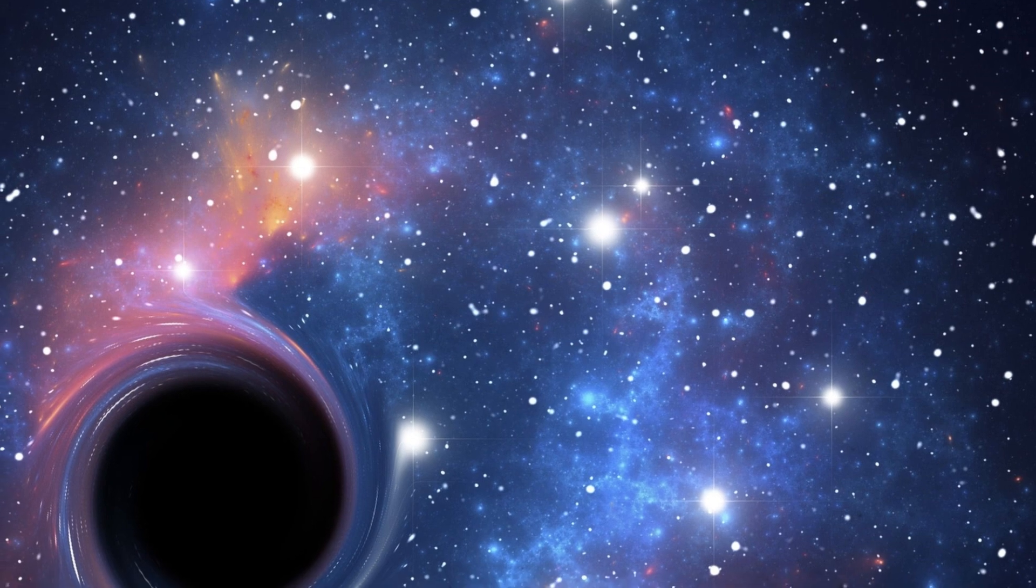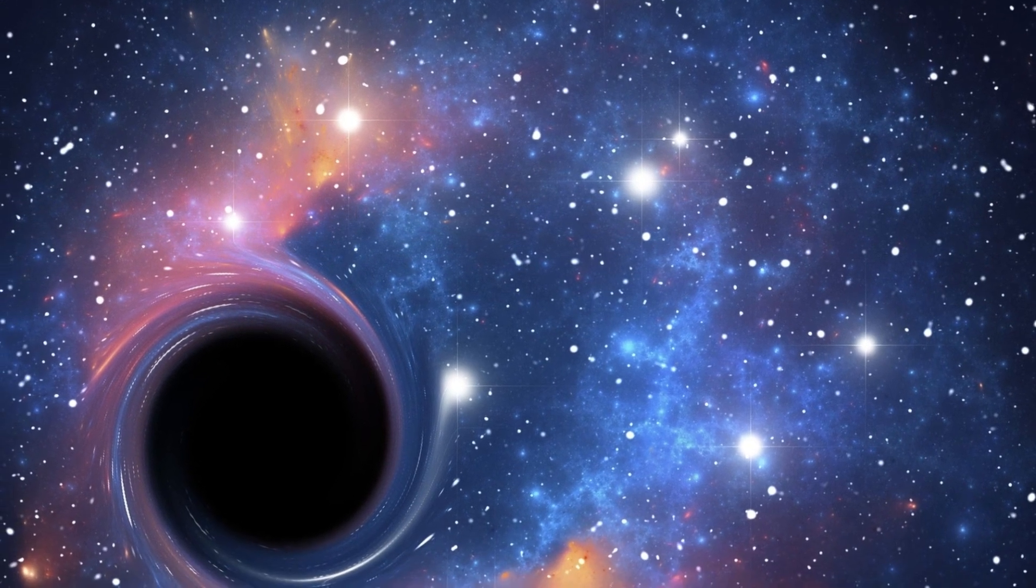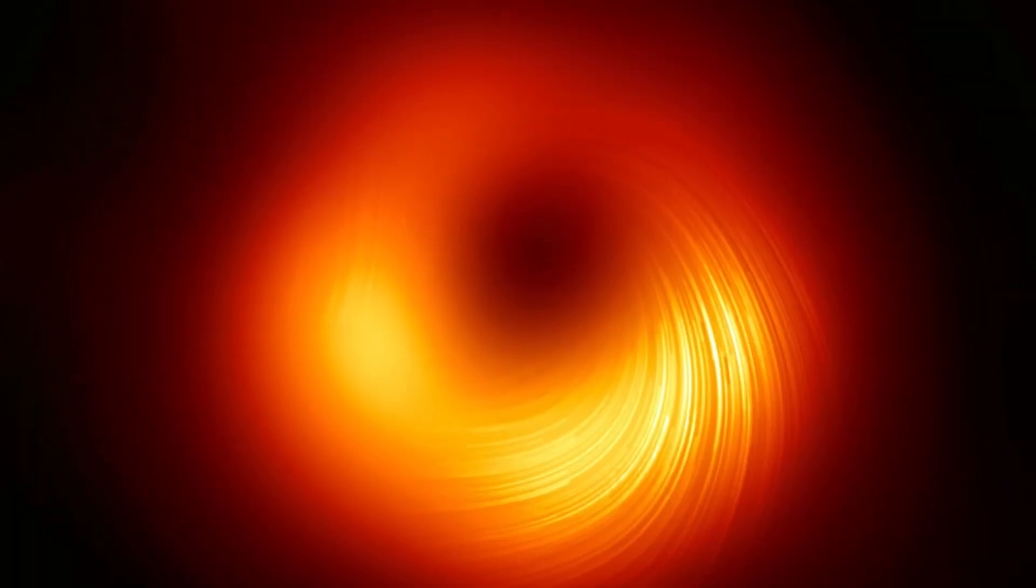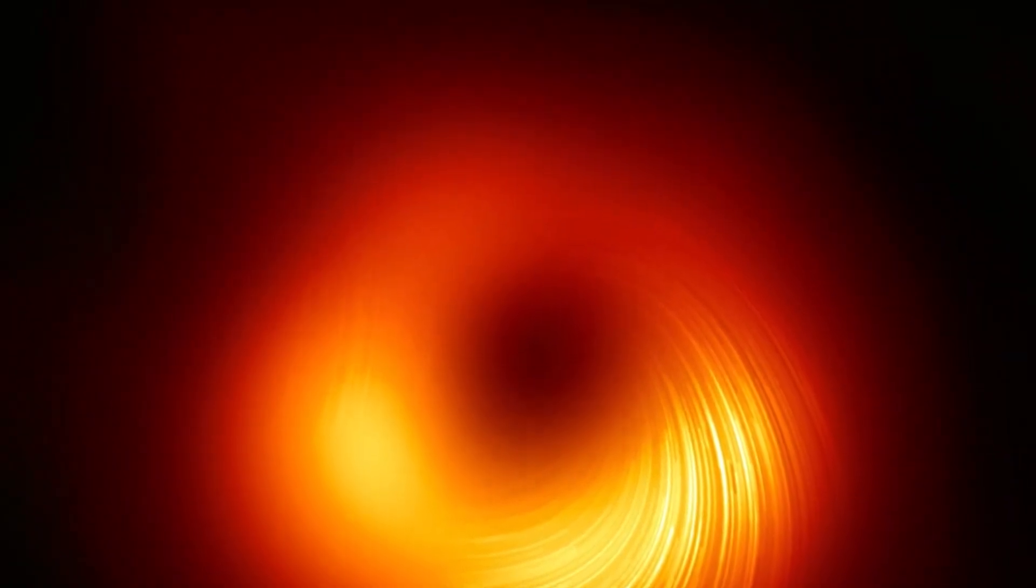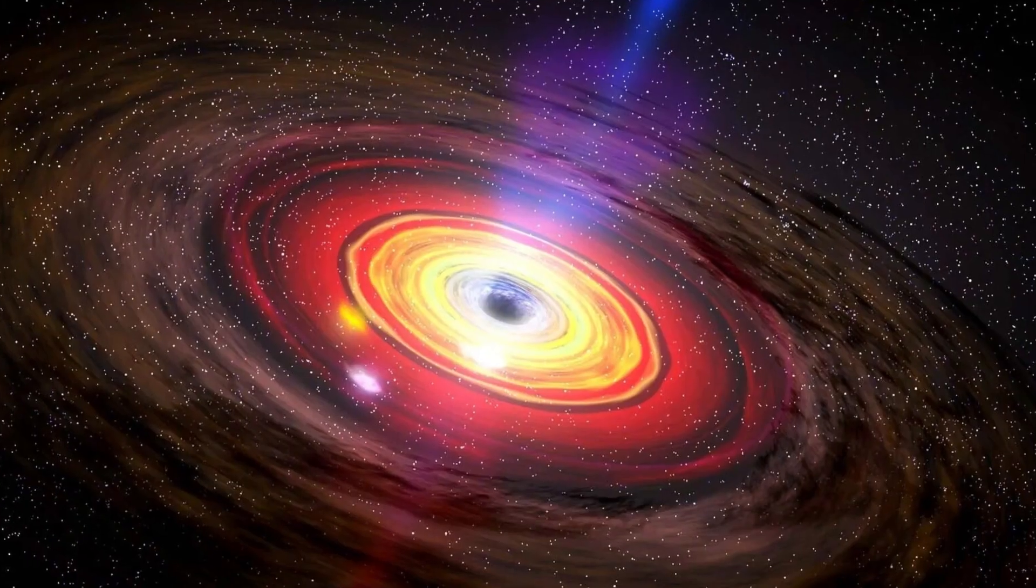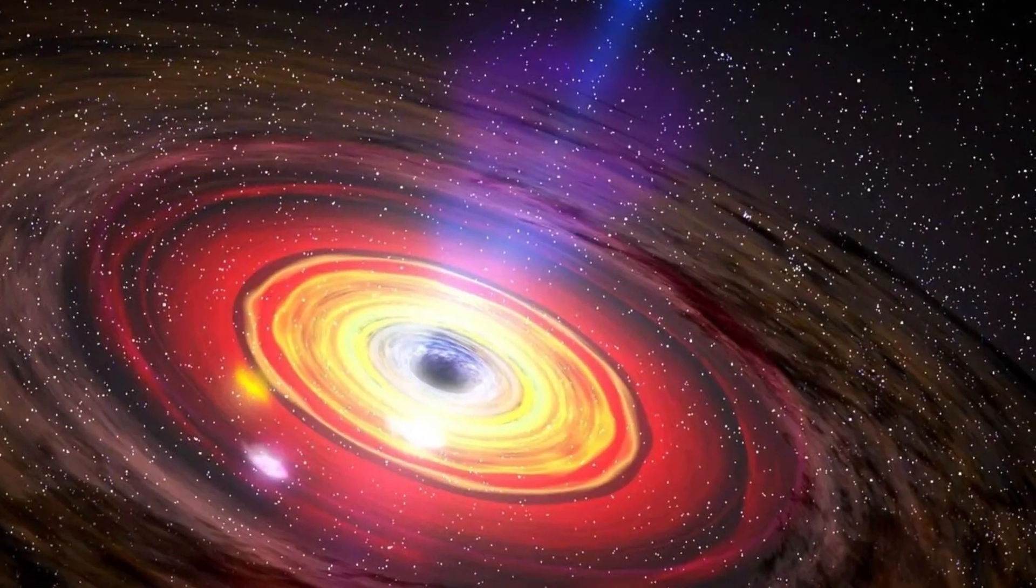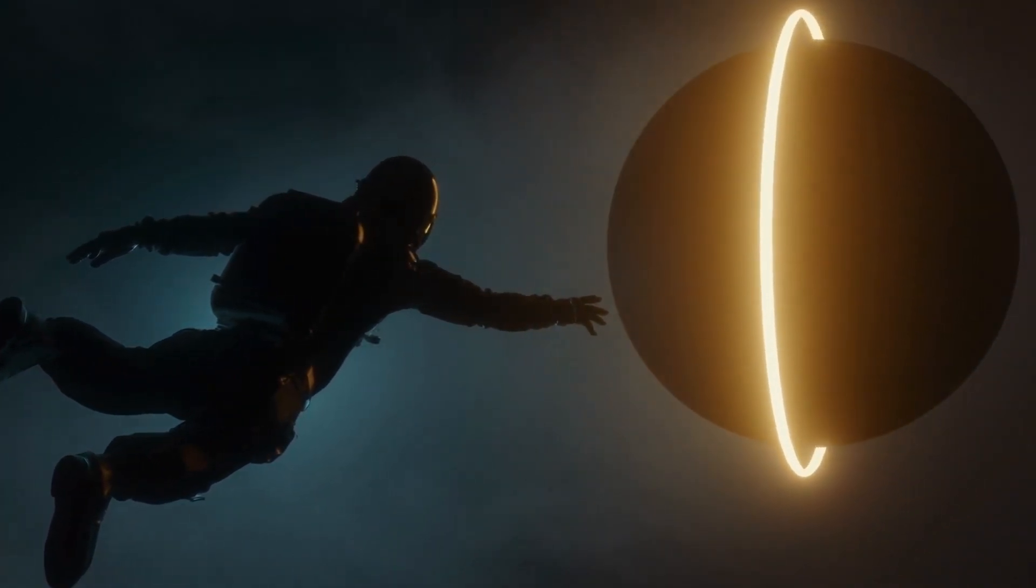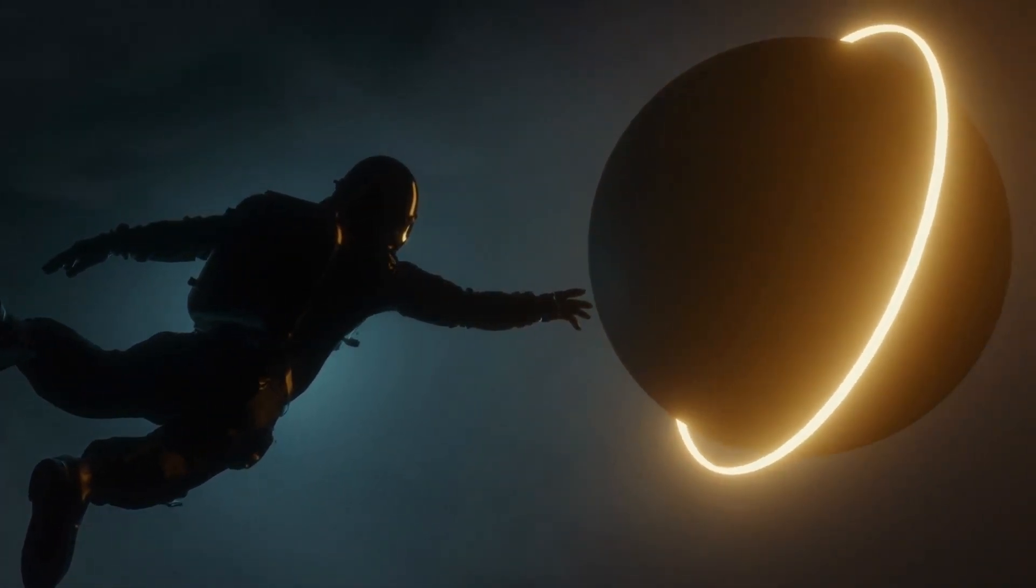For decades, astronomers have hypothesized that there are massive black holes at the center of almost every galaxy. While the M87 is an unusually massive black hole, Sagittarius A is more likely to be like the other galaxy-centered black holes out there. Also, there's a whole lot more that scientists can deduce from the data already collected for the sake of science.